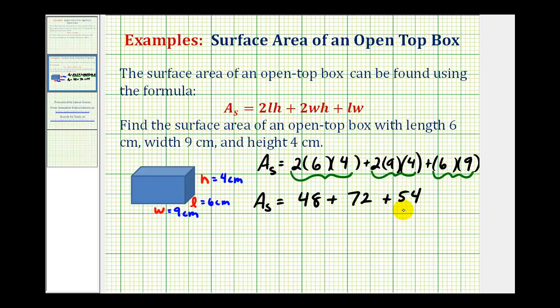And now we'll find this sum, which will be our total surface area. This is equal to 174, which is measured in square units, and since our dimensions are in centimeters, this would be centimeters squared. This would be the surface area of our open top box.